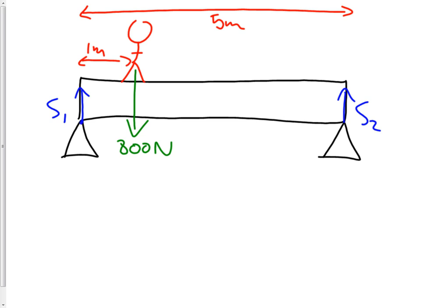If we take moments about this point here, hopefully you'll see that the moment due to this force is zero because it's acting straight through that point. The force is acting straight through that point. There is going to be a moment, a turning effect from this force, a clockwise moment. There is going to be a moment from this force, an anti-clockwise moment. And in fact, that's enough for us to come up with an equation.